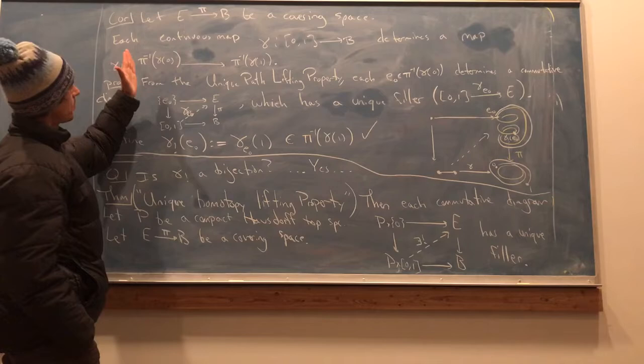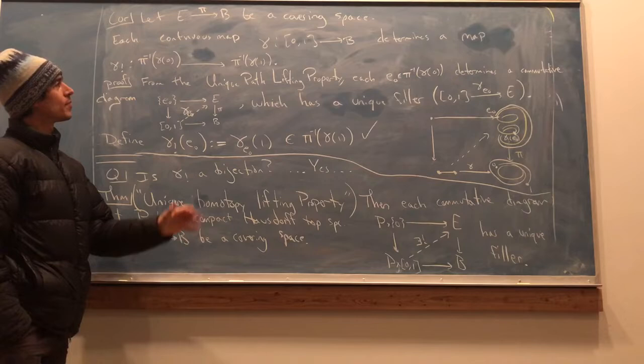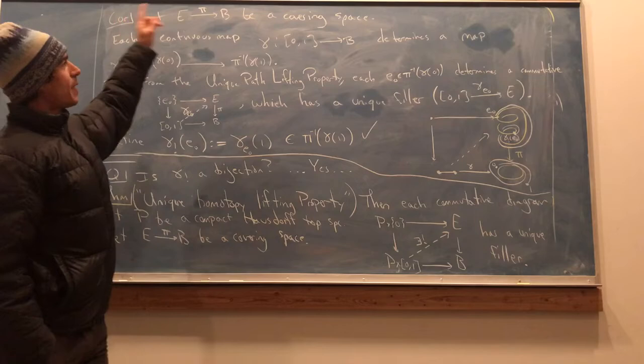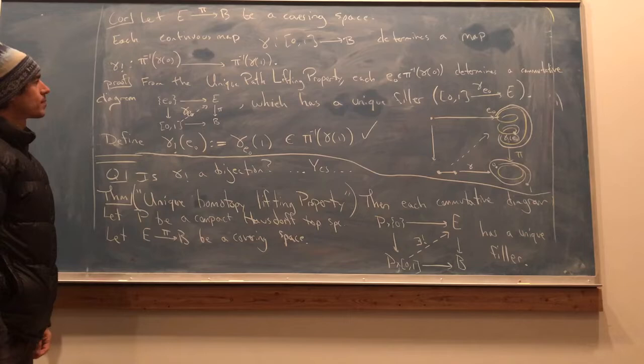So each path, in other words, determines a map from one fiber to the other. This is particularly interesting if the path is actually a loop, it starts and ends in the same place. For them, this gamma lower shriek is a self map of the preimage at that starting and ending point.